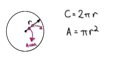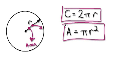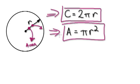So with a circle, if you're given the radius, you can always find out the circumference and you can always find out the area. Both these formulas have to be inside your head. They're so important — it's best just to memorize them.